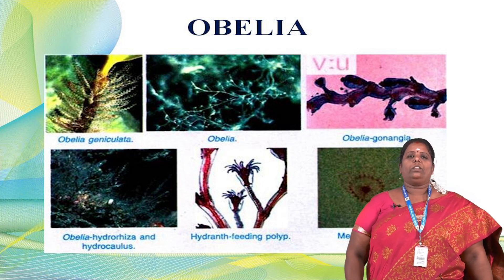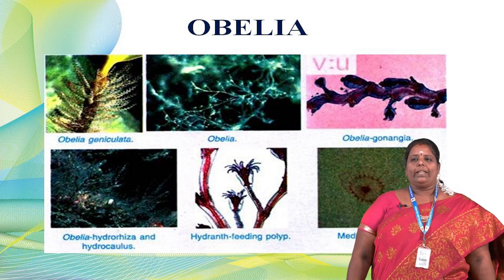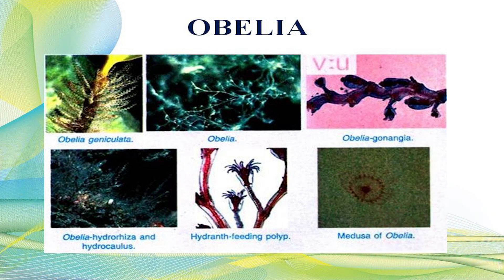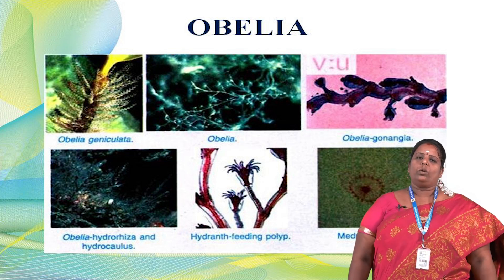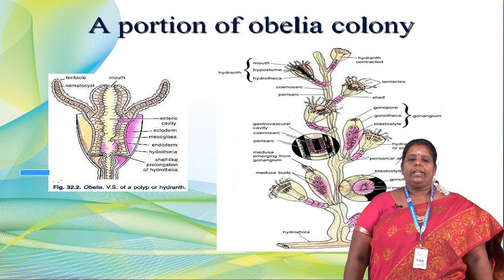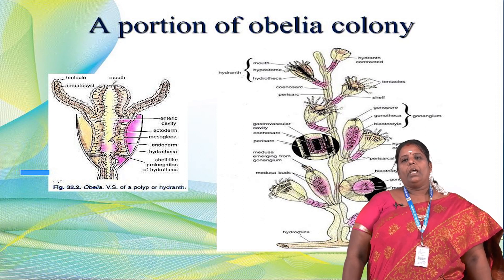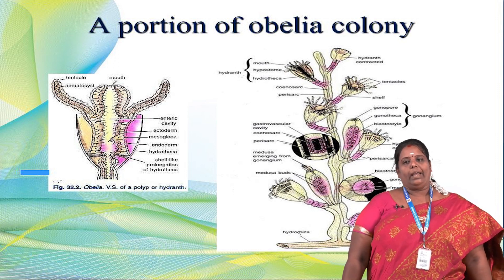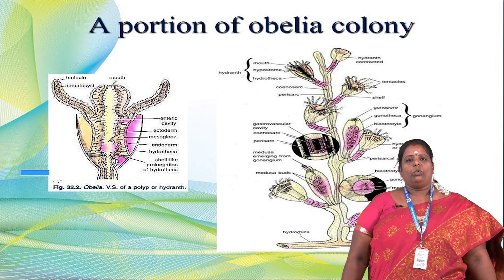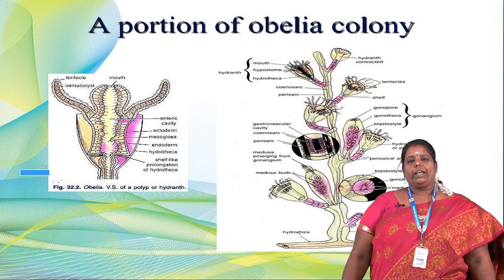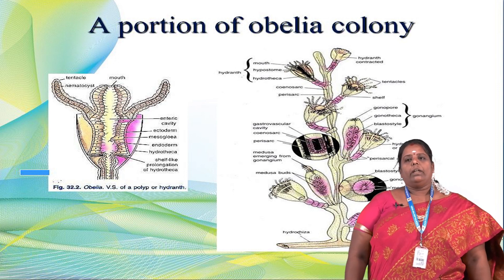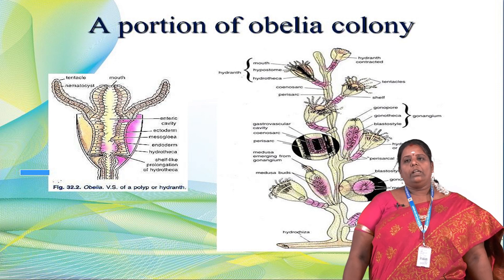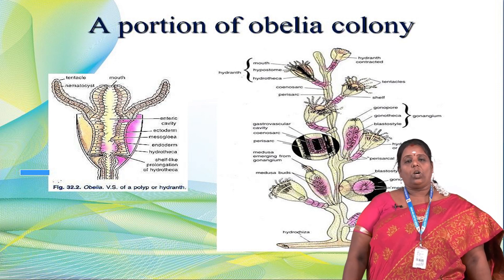The Obelia colony takes in food material through the polyp, and the gongia is used for formation of new individuals. The hydrocallus, polyps, and medusae are all important in the Obelia colony. Looking at the structure, one portion of the Obelia colony shows the base — the hydrocallus — which is attached to a substratum such as rocks or plants. The hydrocallus is the anchoring base. Above the colony there is the blastostyle and the hydrant or polyp, forming many branches of the body.